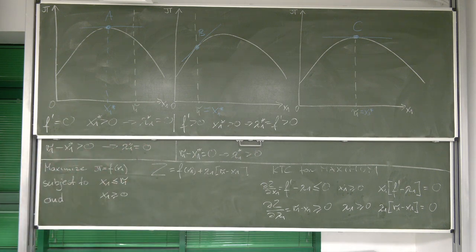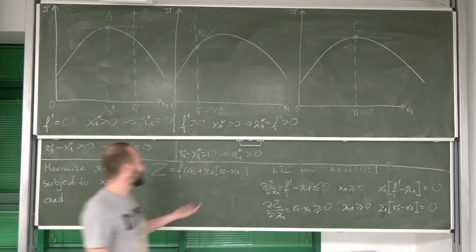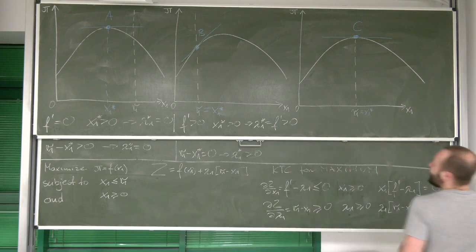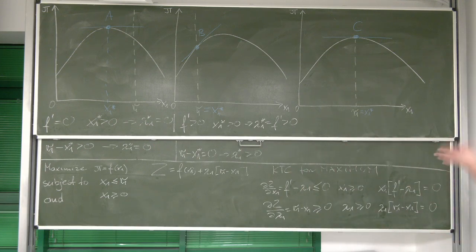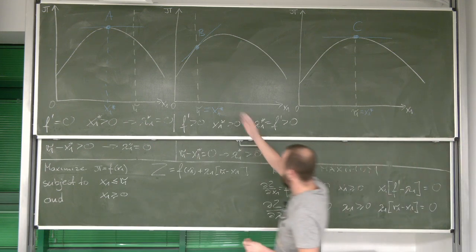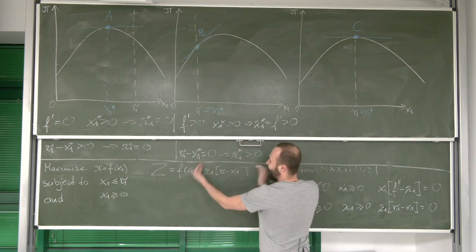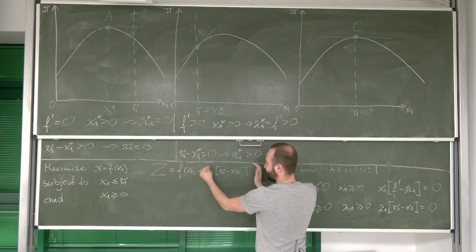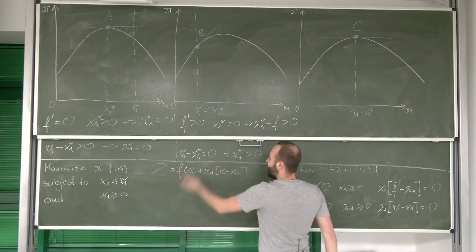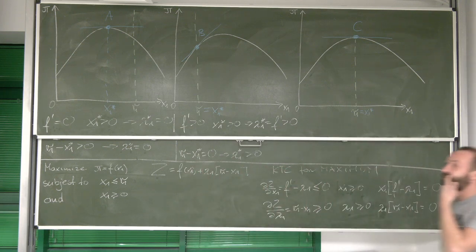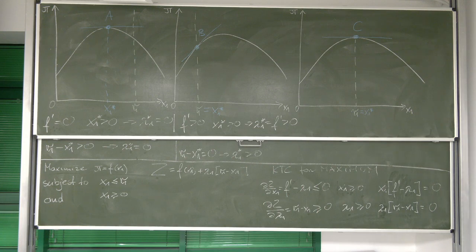This again implies to us that lambda 1 should be higher than zero. And look, in this circumstance, lambda is a positive number. Every time when we get that lambda is a positive number, it means that we are at the constraint. This is zero, right? So this vanishes. However, it vanishes due to a different reason.